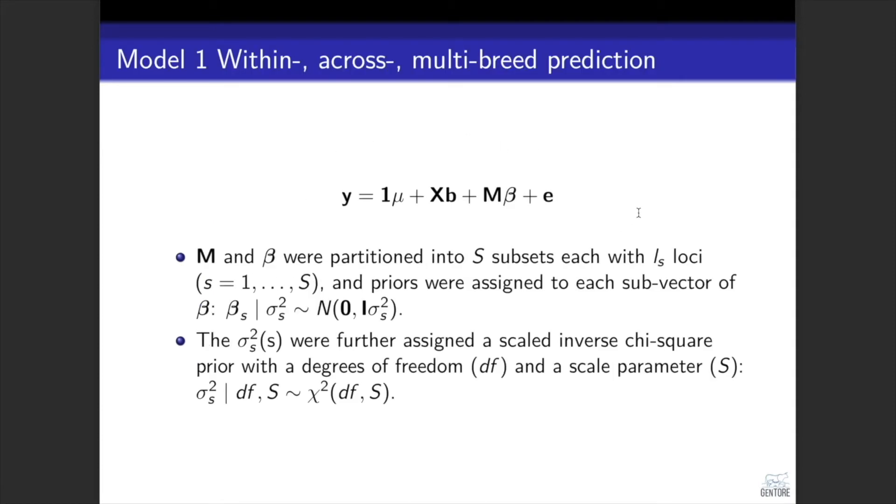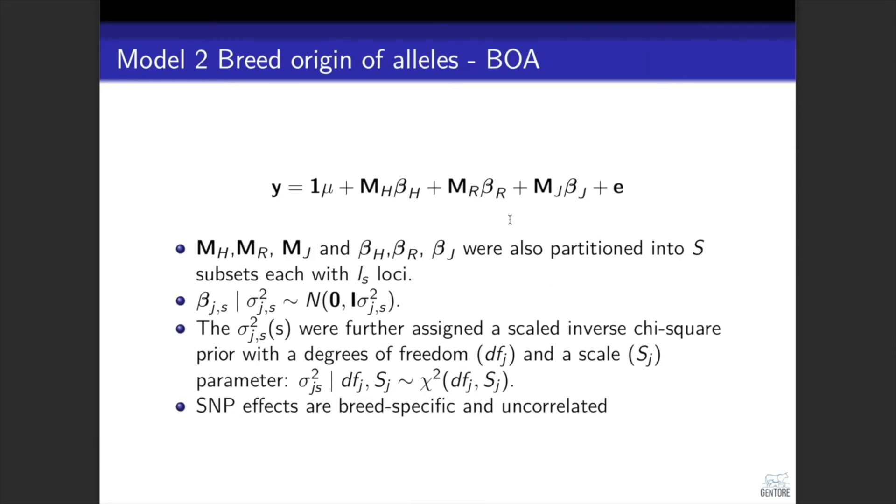For within, across, and multi-breed prediction, we used a simple model. But this XP, which stands for breed proportion, doesn't exist in within and across breed prediction. It exists for multi-breed prediction. We assigned priors to sub-vectors of SNP effects. And for the breed origin of allele approach, we used this model, where we had three components, each component for one breed. We also partitioned the SNP effect vectors and assigned priors to these sub-vectors of SNP effects. This allowed us to assume heterogeneous variance over the genome for each of these three breeds.